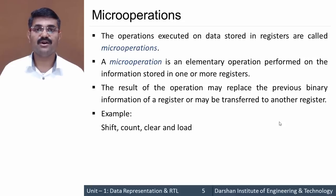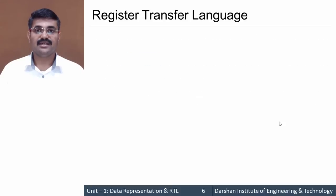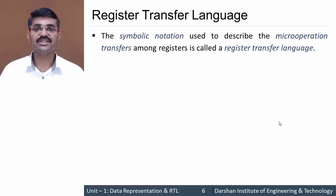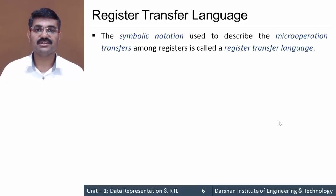We can have various micro operations such as shift, count, clear, and add. Now we can define Register Transfer Language: it is the symbolic notation used to describe the micro operation transfers among registers. It is essentially a language for representing the transfer of data from one register to another.